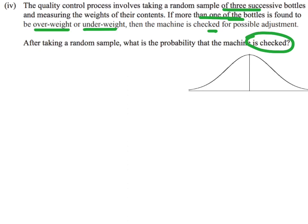Let's start with our normal distribution. We know we've got a mean of 310 and a standard deviation of 4.5. The question talks about bottles being overweight or underweight, so we're going to start by working out what is the probability that a bottle is overweight or underweight.